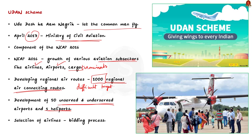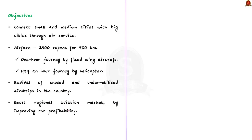The foremost objective is to connect small and medium cities with big cities through air service, reducing travel time and ultimately resulting in the development of economic activities even in small towns. Under the UDAN scheme, the airfare for a one-hour journey by a fixed-wing aircraft or a half-hour journey by a helicopter for about 500 km has been fixed at Rs. 2,500. The unused and underutilized airstrips in the country's vast remote areas would also be revived to provide necessary support for regional connectivity.